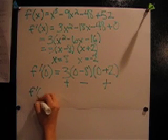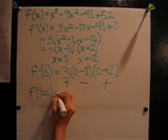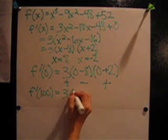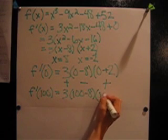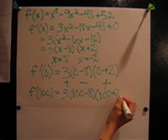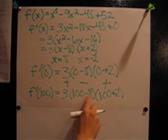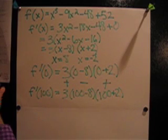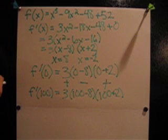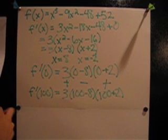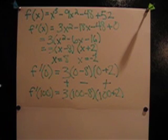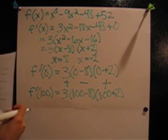f prime of 100 equals 3, 100 minus 8, close parentheses, 100 plus 2. Each of these is positive. So then f prime of 100 is positive and is increasing. The function is increasing from 8 to 100. We know that there are no zeros to change that between 8 and 100 as well.